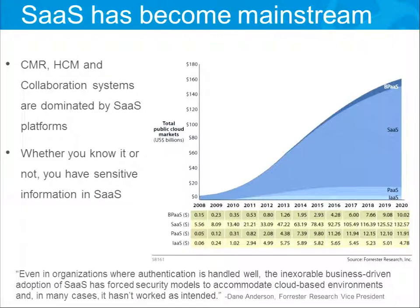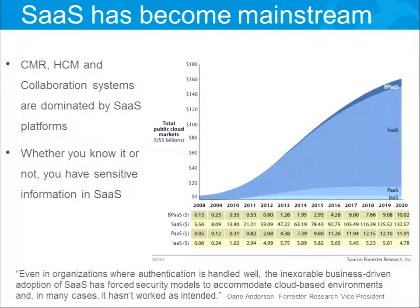The word SaaS repeats a lot in this presentation and it's not a mistake. There are many buzzwords in this topic — sometimes there's 'cloud,' a word I will not use because it is too ambiguous. SaaS specifically means software as a service, meaning people interact directly with a service that the company receives from a third party. This fundamentally changes how we interact with company resources and affects the fundamental concept of enterprise security.